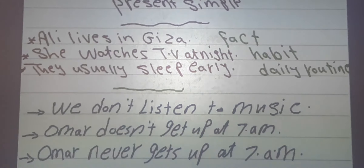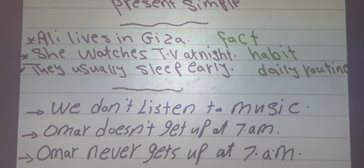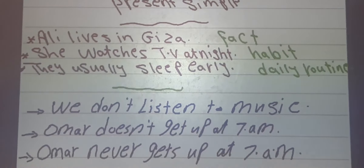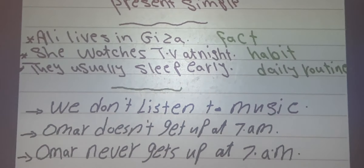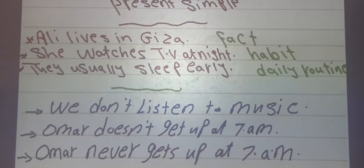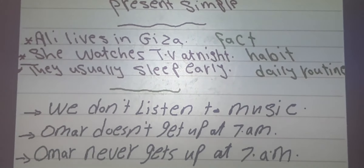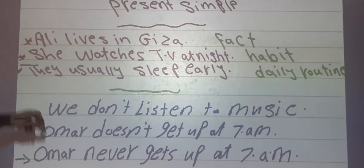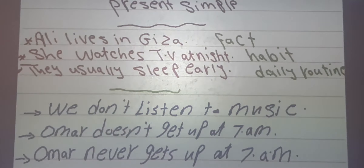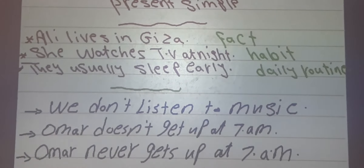Pay attention: Ali lives — we add S to the verb. She watches — we add ES. So with the pronouns he, she, it, we add S, ES, or IES to the verb. But with plural pronouns or plural nouns, we keep the verb in its base form.